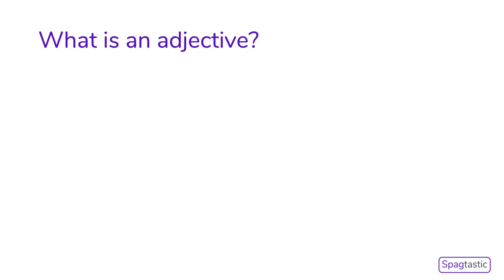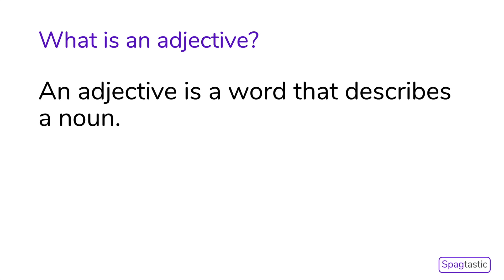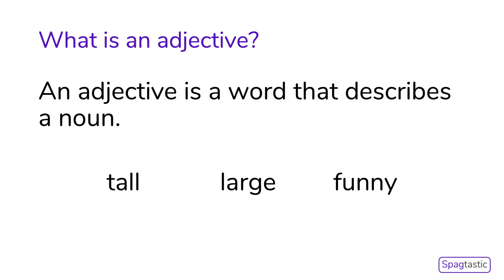Now let's think about what an adjective is. An adjective is a word that describes a noun. Remember that a noun is a naming word. Tall, large and funny are all adjectives.